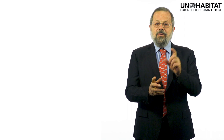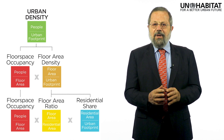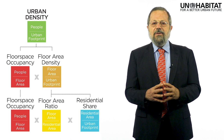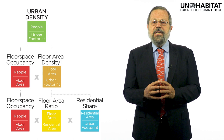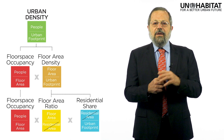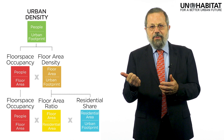We can go further by breaking down floor area density into two factors, thus decomposing urban density into three factors. The floor area ratio — the yellow box — is a common density metric defined as the ratio of the total residential floor area in the city and the total residential area of the city, net of streets and other land uses. The residential share — the blue box on the right — is the share of the city's urban footprint occupied by residential areas. When we multiply the floor area ratio by residential share, the residential area cancels out and we get floor area density. This means urban density can be represented as a product of three factors: floor space occupancy, floor area ratio, and residential share.